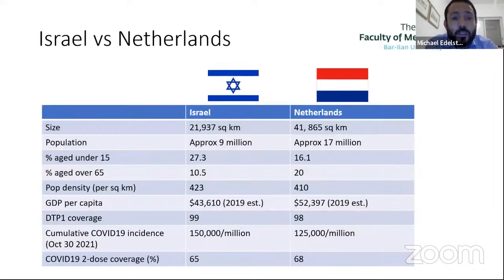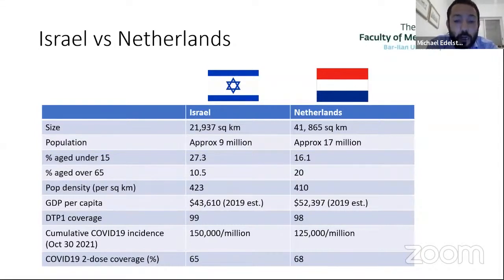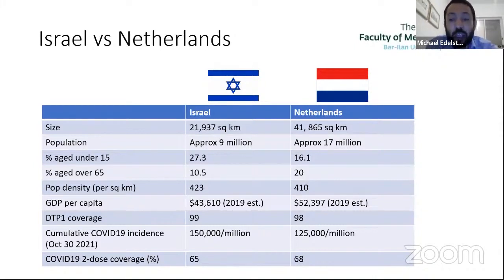A quick comparison between Israel and the Netherlands: both are relatively small countries with a very similar and quite high population density. However, they have a very different age distribution — Israel has a very young population, with over a quarter of the population below the age of 15, much closer to what you expect in low and middle income countries. Despite their differences, both ended up with relatively similar COVID incidence and similar vaccine coverage.